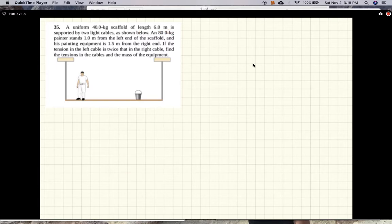An 80 kg painter stands 1 meter from the left end of the scaffold, this is 1 meter, and his painting equipment is 1.5 meters from the right end. If the tension in the left cable is twice in the right cable, find the tensions in the cable and the mass of the equipment.